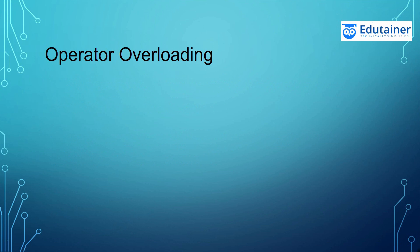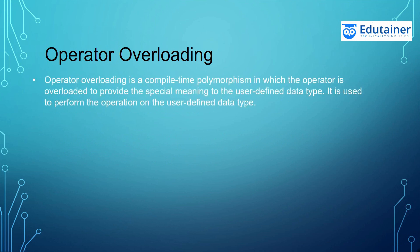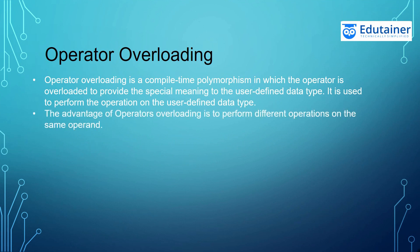Operator overloading. You have seen function overloading in code blocks and got an idea of what it is. Similarly, there is operator overloading — we will be overloading the operator. Operator overloading is a compile time polymorphism in which the operator is overloaded to provide special meaning to user defined data. It is used to perform operations on user defined data types. The advantage of operator overloading is to perform different operations on the same operator.